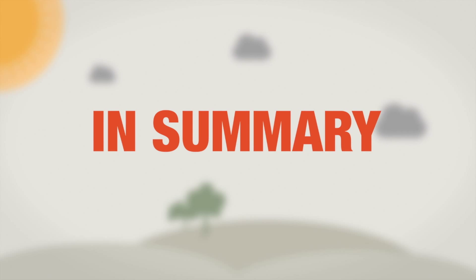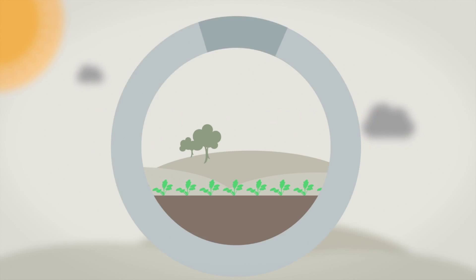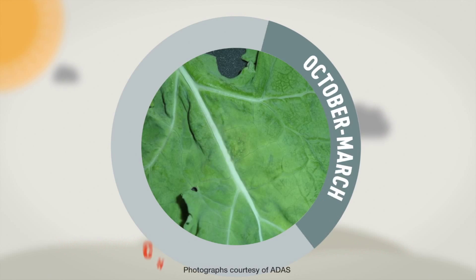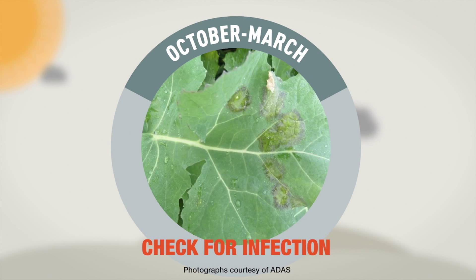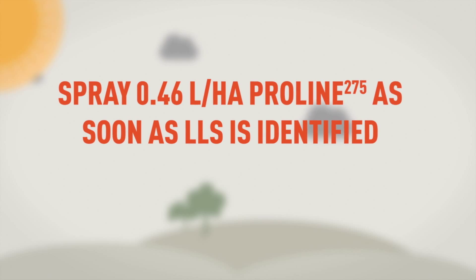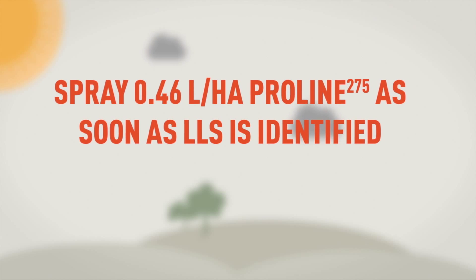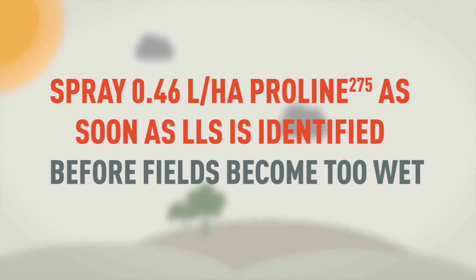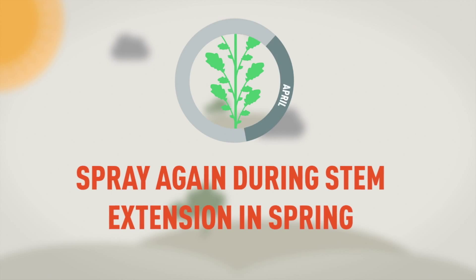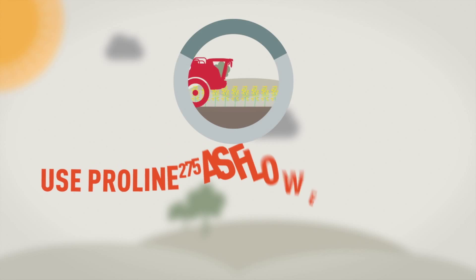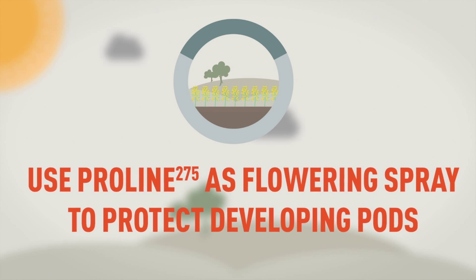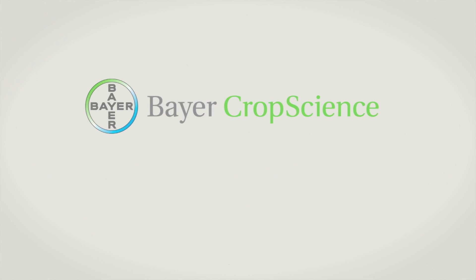In summary, for effective control of lightleaf spot in oilseed rape plants: use treatments with lightleaf spot activity such as proline at the autumn FOMA timing if required; check plants for lightleaf spot infection between October and March; spray proline at 0.46 litres per hectare as soon as infection is seen or before fields become too wet to travel on in winter; spray plants again in spring to control the disease through to stem extension; and use treatments with lightleaf spot activity at flowering if the disease is present in the canopy to help protect the developing pods.